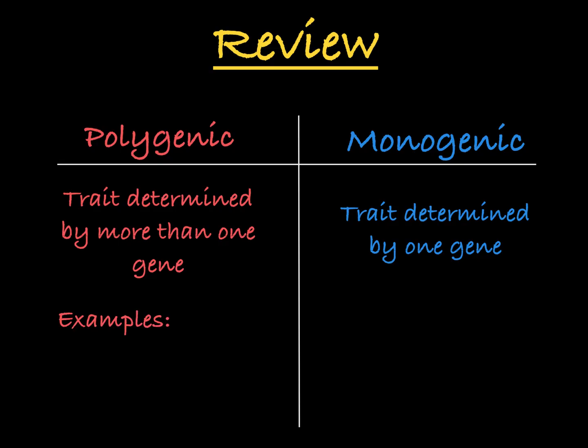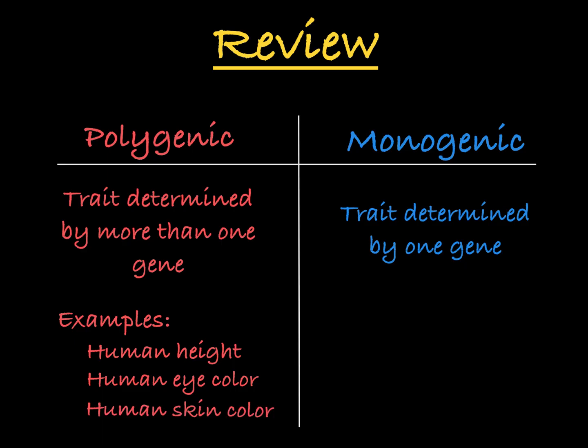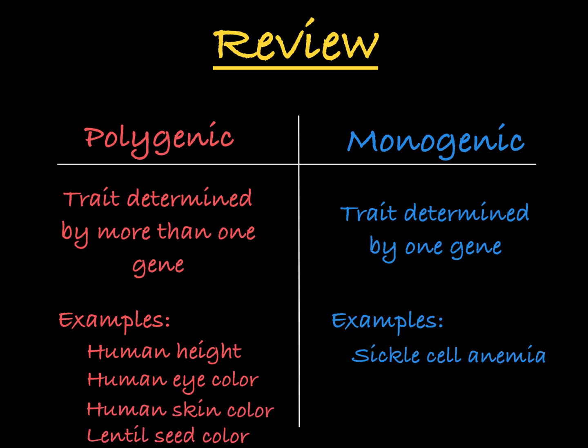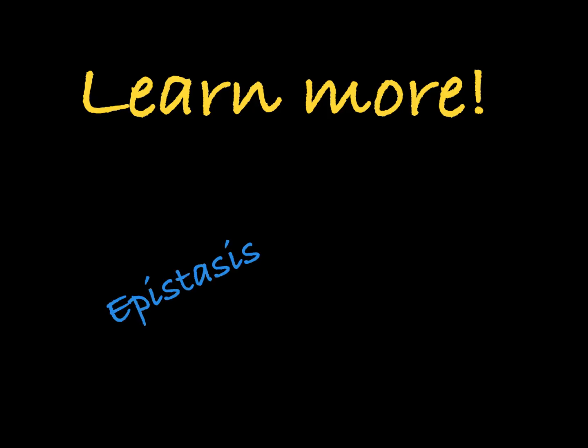Human height, eye color, skin color, and lentil seed coat color are polygenic traits, while diseases like sickle cell anemia and Huntington's disease are examples of monogenic traits. The example in this video was one where multiple genes associated with the trait have an additive effect leading to a phenotype. Other examples of polygenic traits come with epistasis and genetic redundancy. If you'd like to learn more, see my videos covering those topics.